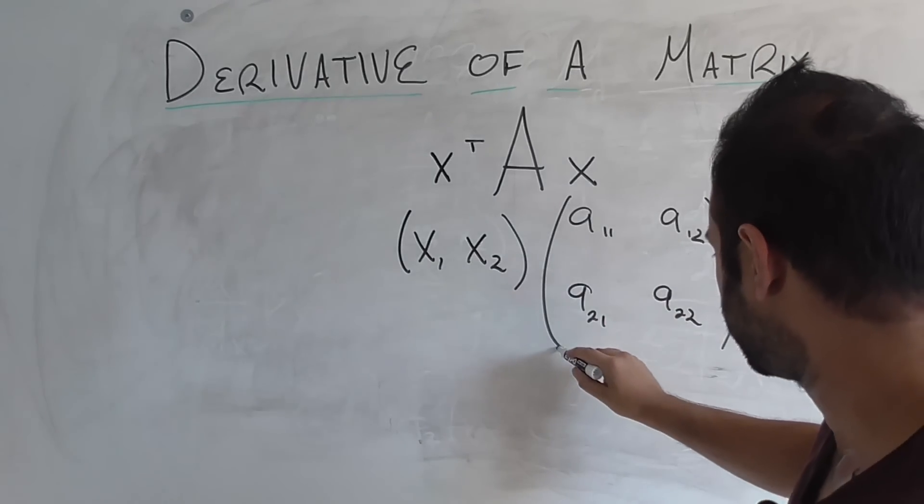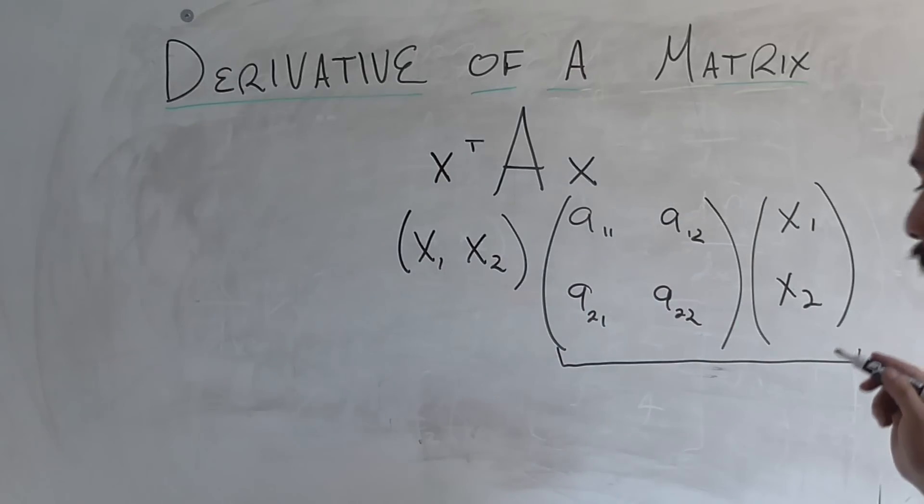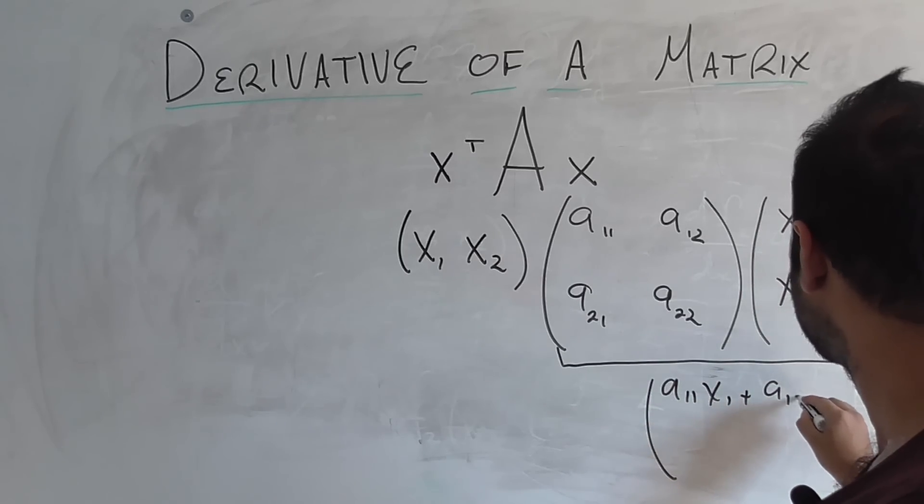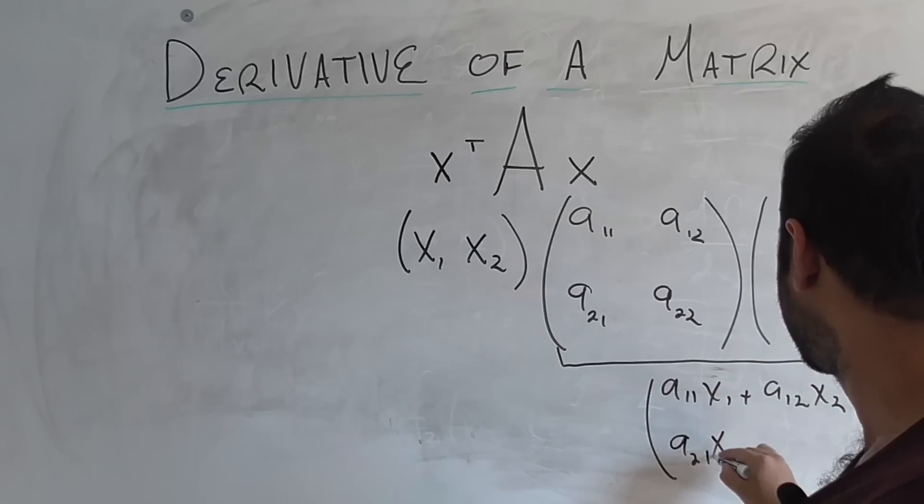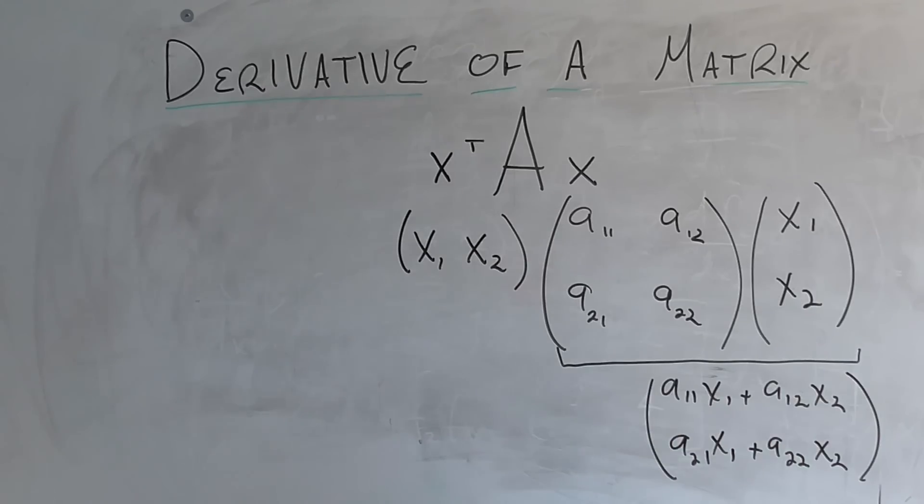Let's do these two first since we just did something like that. So we're going to get a11x1 plus a12x2. We're going to get a21x1 plus a22x2.